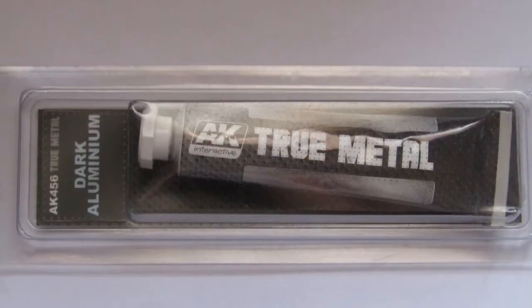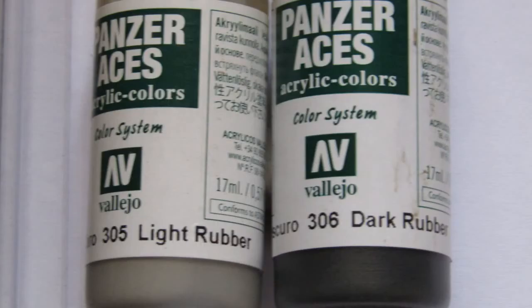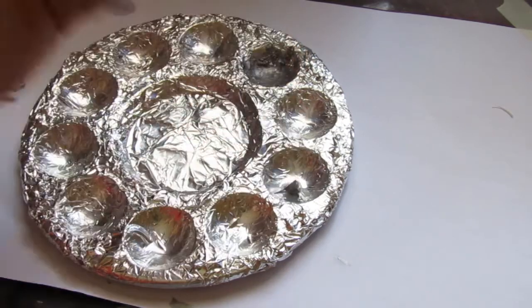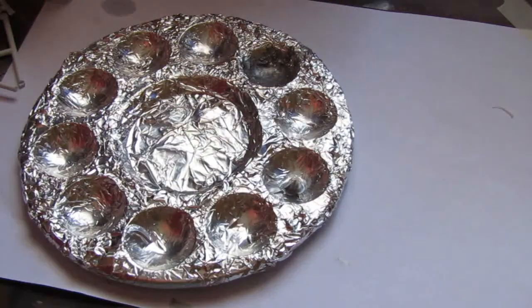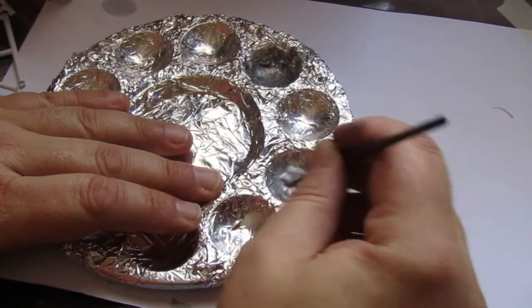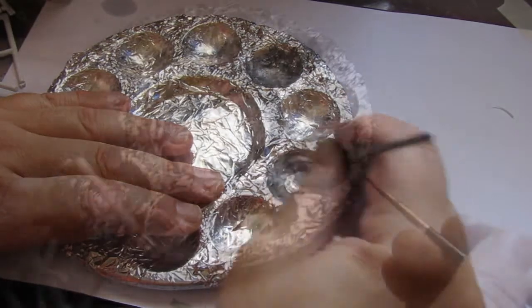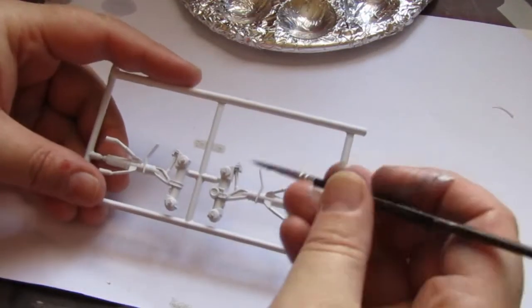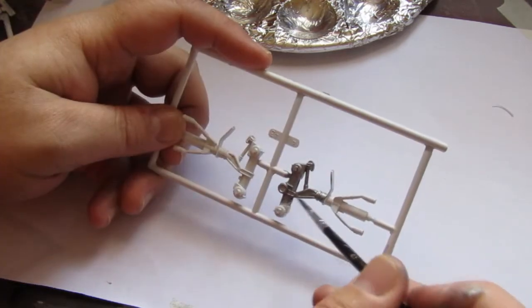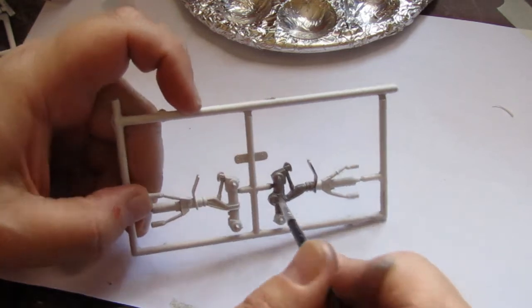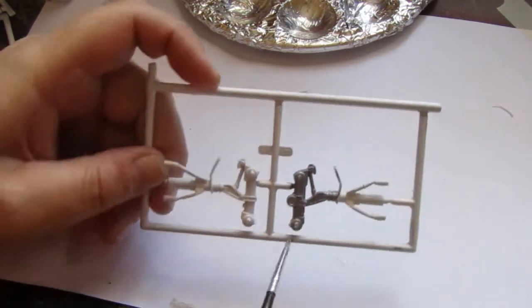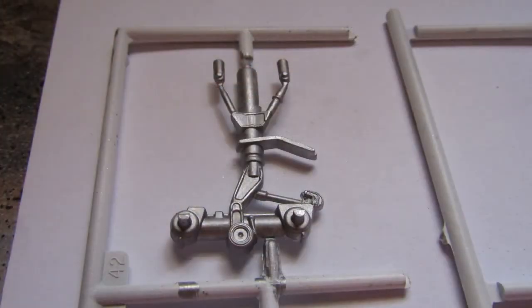I decided to use True Metal Dark Aluminum to paint the landing gear and Panzer Aces Dark Rubber for the wheels. I squeezed out a little of the dark aluminum from the tube and thinned it with some odorless solvent. The True Metal range is very versatile. Besides thinning it down and applying it by brush, it can be thinned even further and used in an airbrush, or used straight out of the tube as a metal polish. Once dry, it has a beautiful metallic sheen.